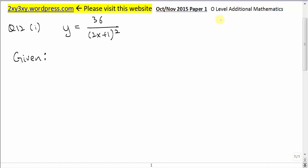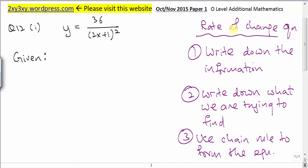This video explains the solution to Singapore GCE O-level additional math 2015 paper 1, question 12. This is a rate of change question. For rate of change questions, I usually do these three steps: write down the information given, write down what we are trying to find, and use chain rule to form the equations.